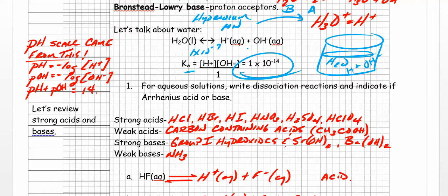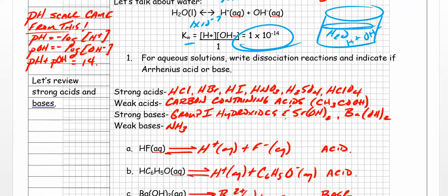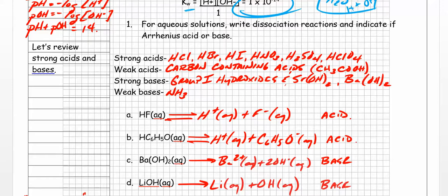Now let's go over strong acids versus weak acids and strong bases and weak bases. When we say a strong acid or strong base, we mean complete dissociation - indicated simply with a single arrow to the right. Weak means not completely dissociated, so we use a double arrow - that's called equilibrium, and we've done a whole unit on equilibrium.